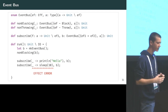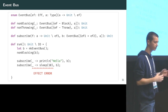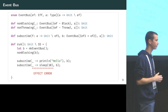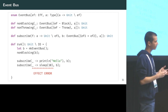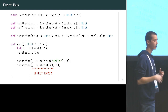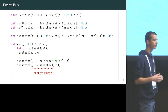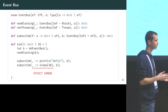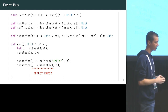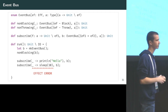The event bus library is more interesting because the EventBus type is parameterized by an effect. The EventBus enum declaration has an effect parameter representing the effects allowed by functions contained within it. We have 'non-blocking' and 'non-throwing' functions which take an event bus and enforce that it lacks the block or throw effect. The subscribe function requires that any function f subscribed to the event bus has effects that are a subset of those allowed by the event bus.